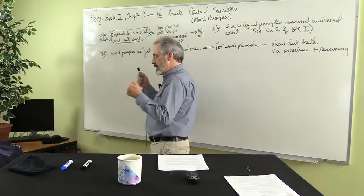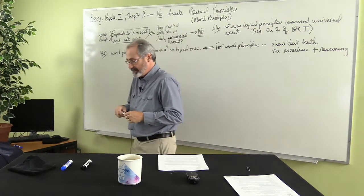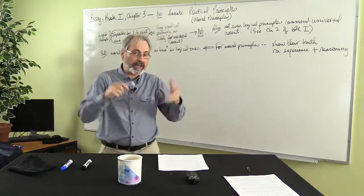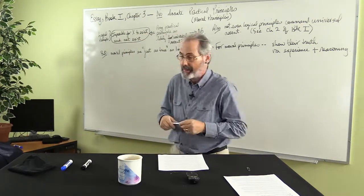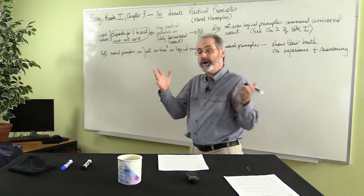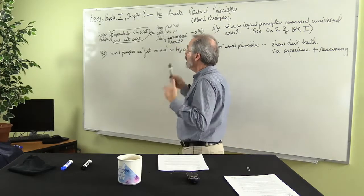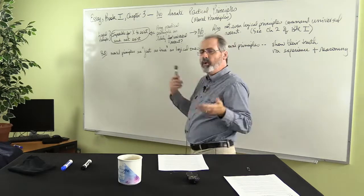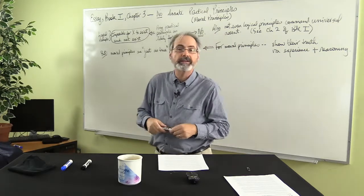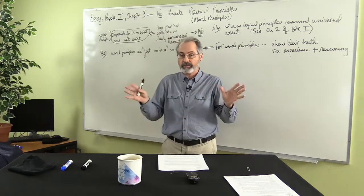Now, we've seen that Locke does not want to accept innate speculative principles like logic. We saw that in a previous video, and that would be in Book 1, Chapter 2. In this video, we're still in Book 1, we're moving on to Chapter 3, and we're watching Locke build his argument against innate principles in general.